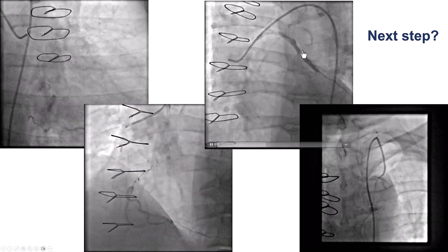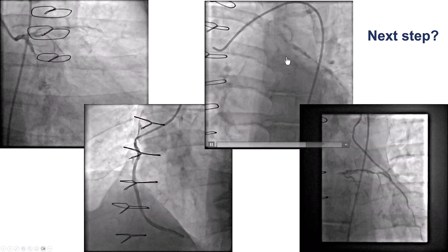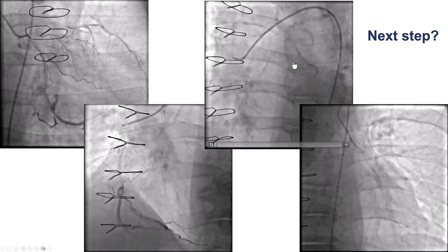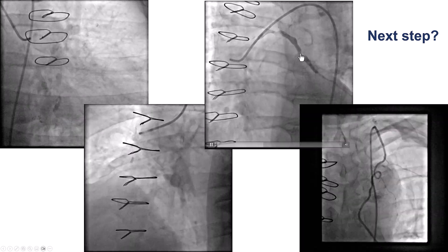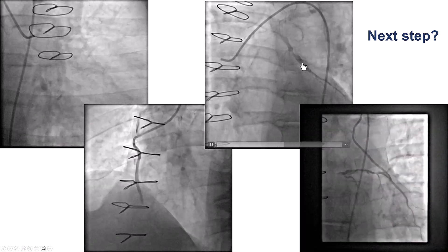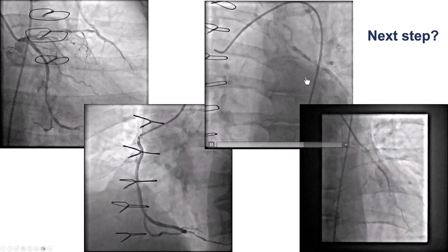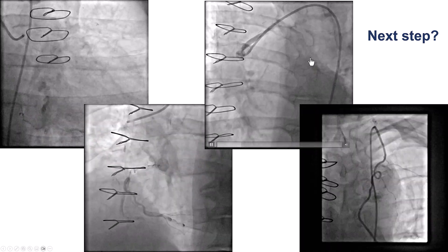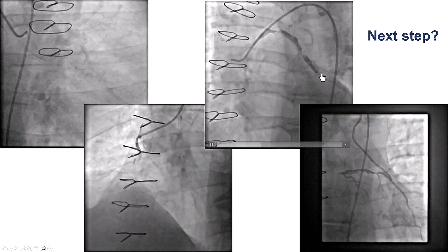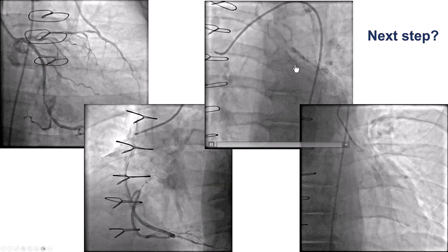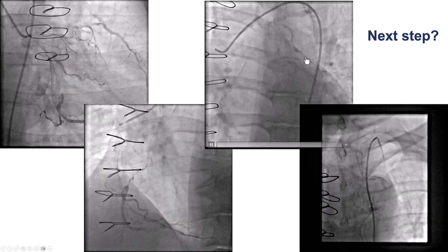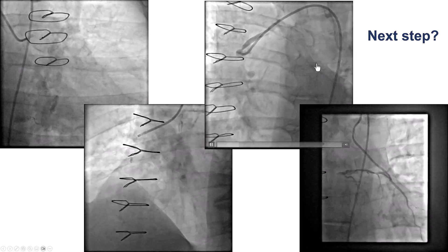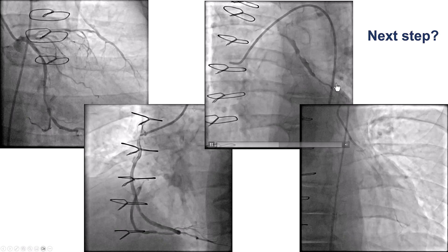We had the filter wire and the spider available, and we elected to use the spider. There was maybe not the best landing zone distally, but we thought we could place a filter distal to the lesion that could protect the native vessel. Sometimes we can actually place the filter partially inside the native vessel.